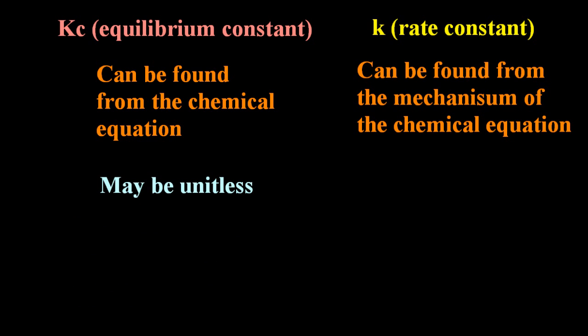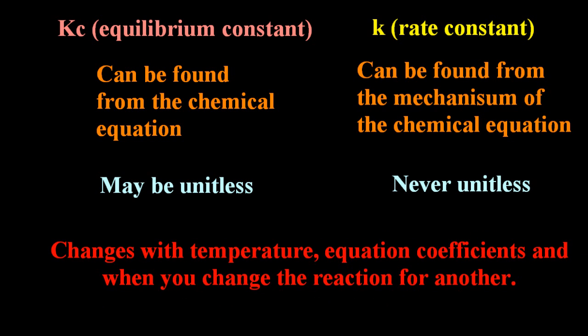Kc may be unitless. But k, the rate constant, is never unitless. And they're not constant in the sense that they change with temperature. That will change the values of both of them. If you change the equation coefficients, that will change them. And if you just change the reaction for another one, it will just be a different value of Kc.